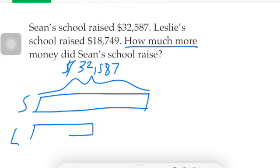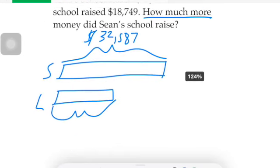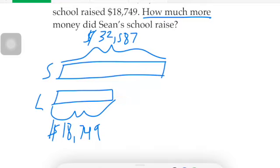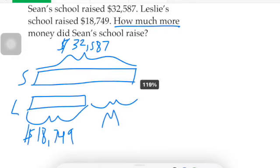Leslie had eighteen thousand seven hundred forty-nine dollars — a little over half of Sean's amount. And we want to know how much more, so we have this missing portion here. I'm going to label it M for missing.